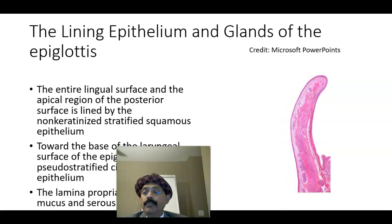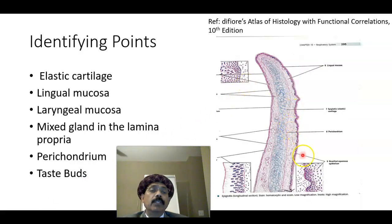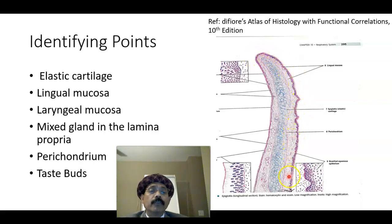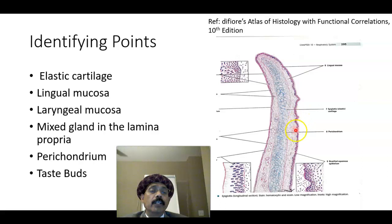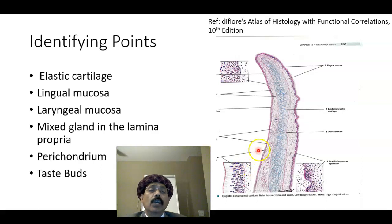Looking at the previous image, the lining epithelium on the lingual surface is stratified squamous epithelium. On the entire lingual surface it is stratified squamous epithelium. In the upper part of the laryngeal surface it is still stratified squamous non-keratinized epithelium. This is also non-keratinized on the lingual surface. The lower part of the laryngeal surface lining epithelium is the pseudostratified ciliated columnar epithelium, also called respiratory epithelium.